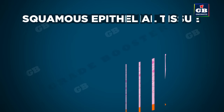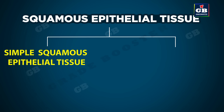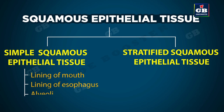Squamous epithelial tissue is of two types: simple squamous epithelial tissue and stratified squamous epithelial tissue. Examples of simple squamous epithelial tissue are lining of mouth, lining of esophagus, alveoli, and blood capillaries. An example of stratified squamous epithelium is skin.